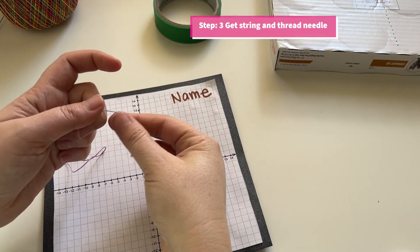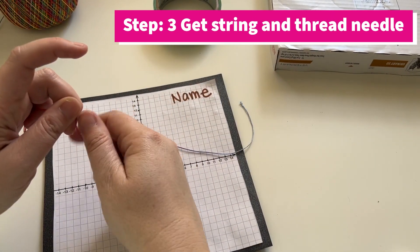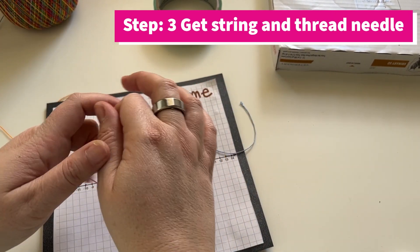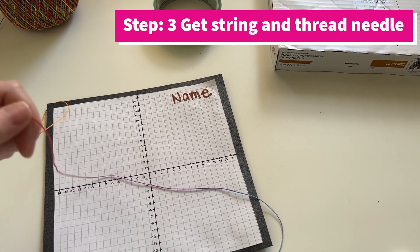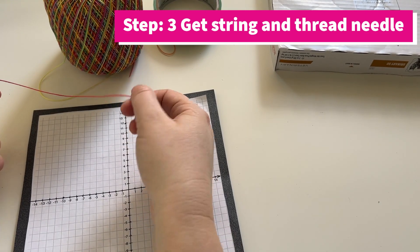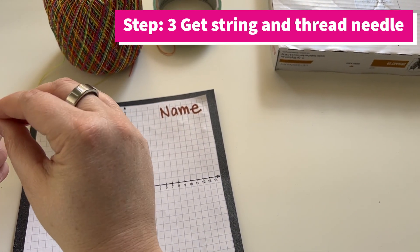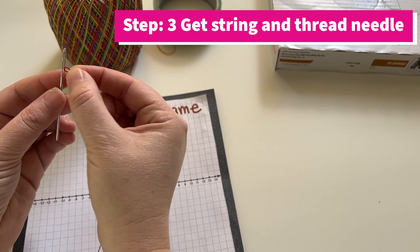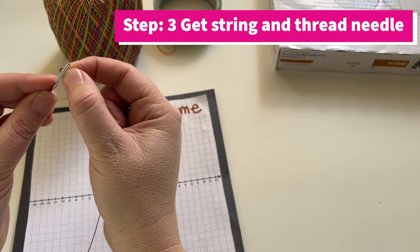Now you're going to get about two arms lengths or two table widths of your string and then cut that out. Next we're going to thread our embroidery needle. I find it a little easier to fold it and thread it through.